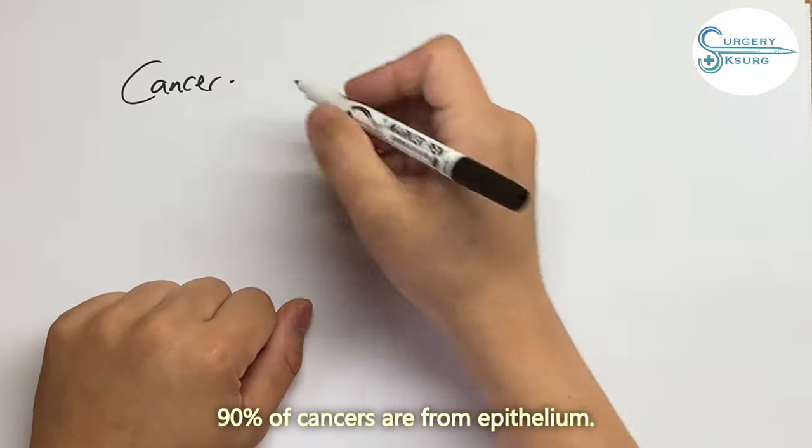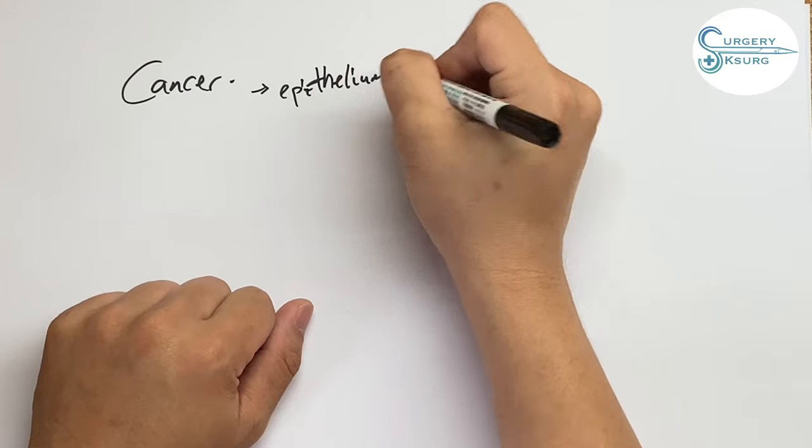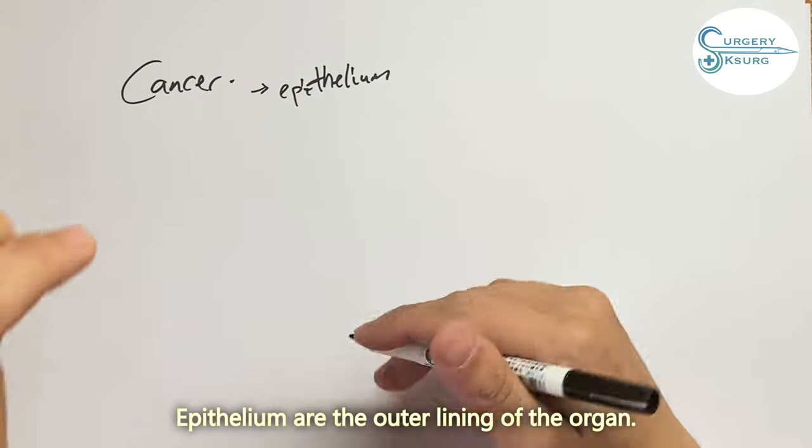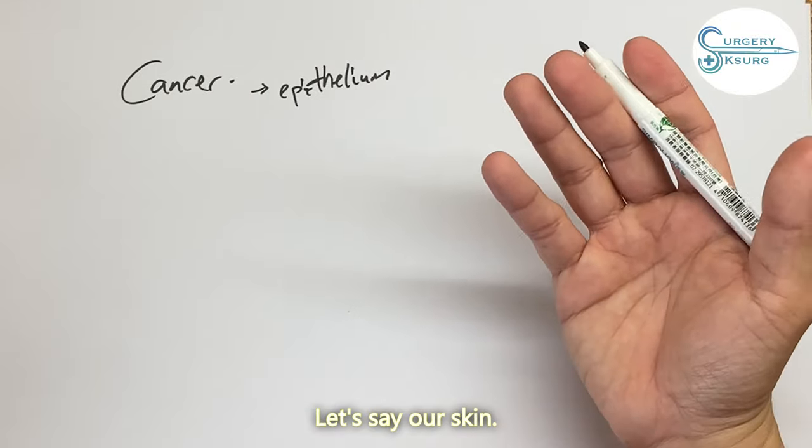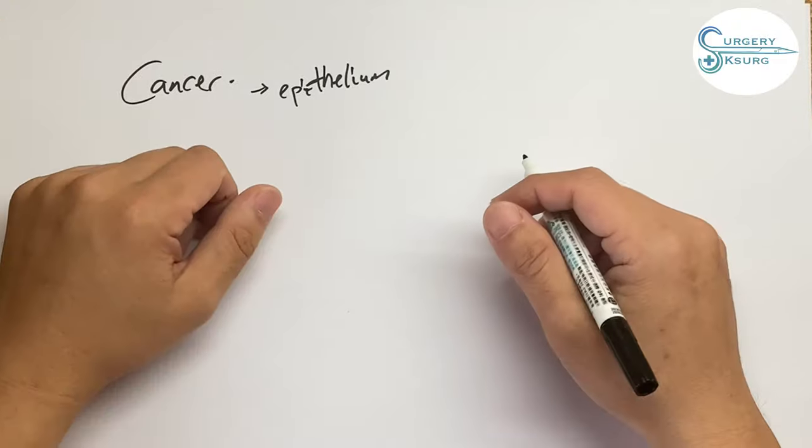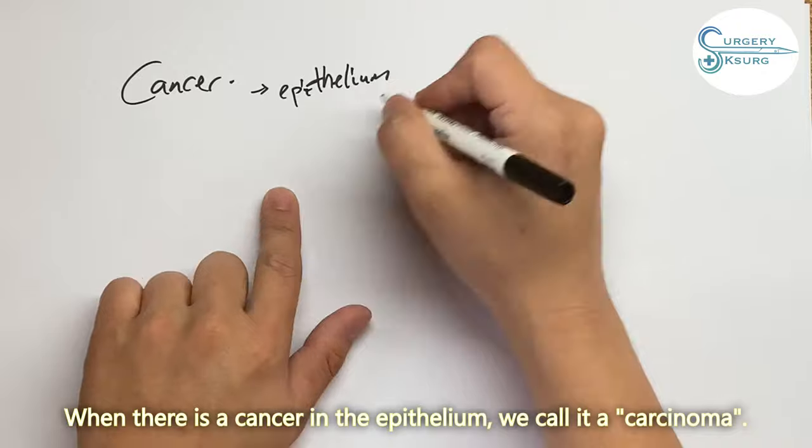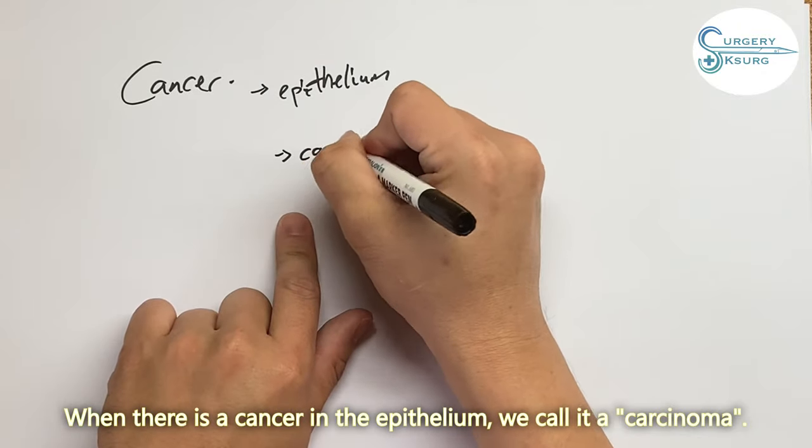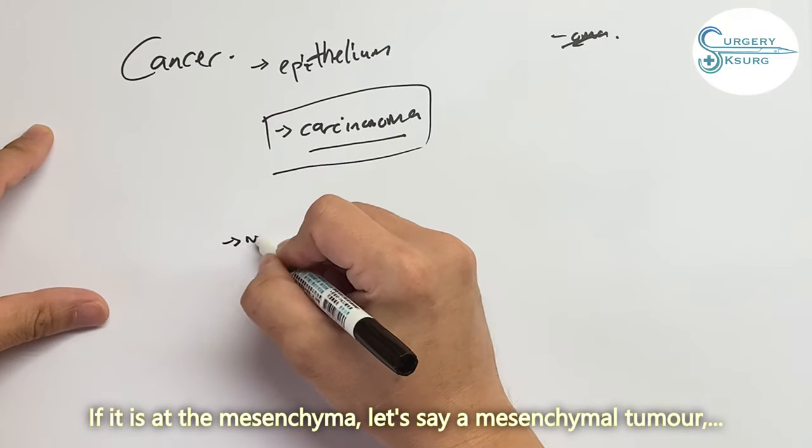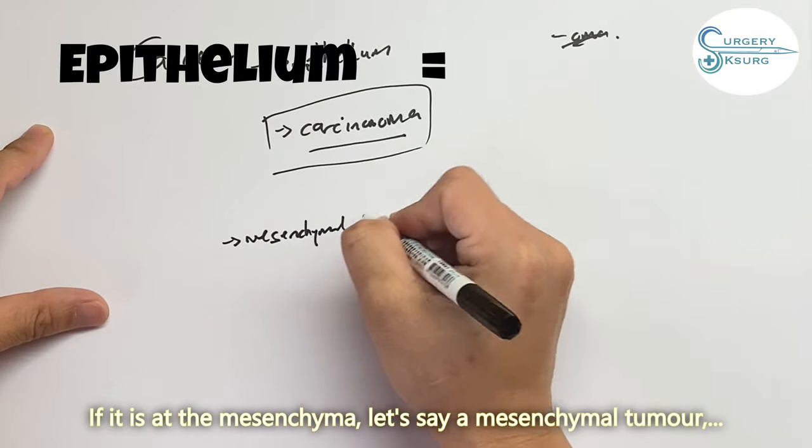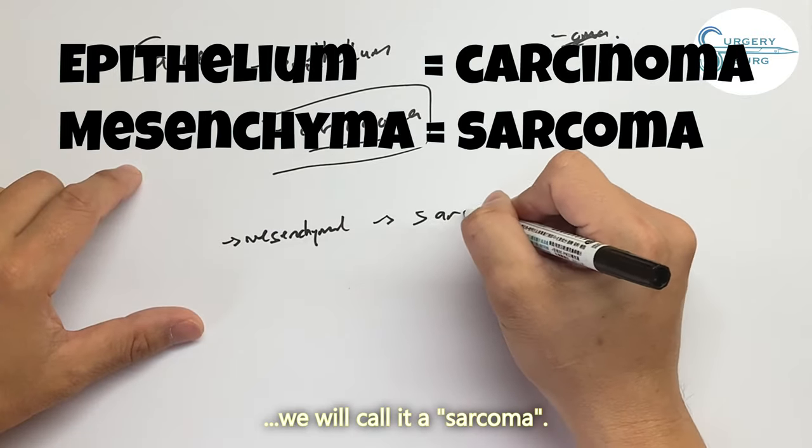Ninety percent of cancers are from epithelium. Epithelium are the outer lining of the organ - let's say our skin, in the bowel it's the mucosa - all those are epithelium. So when there is a cancer in the epithelium, we call it a carcinoma. But if this is at the mesenchyma, mesenchymal tumors we always call a sarcoma.